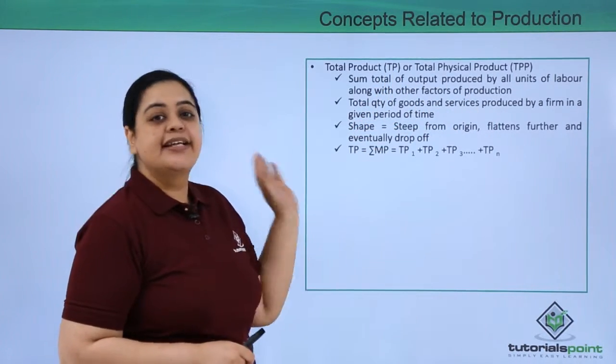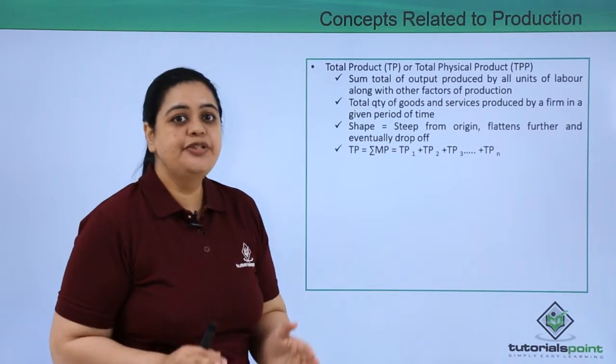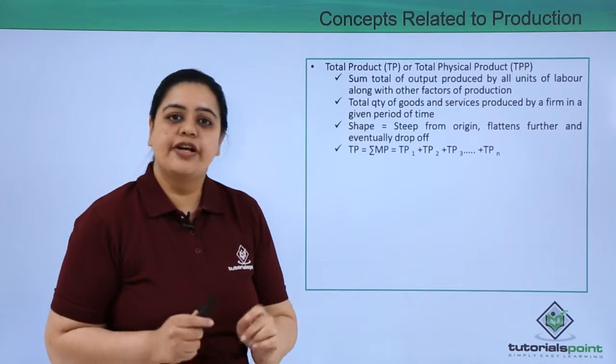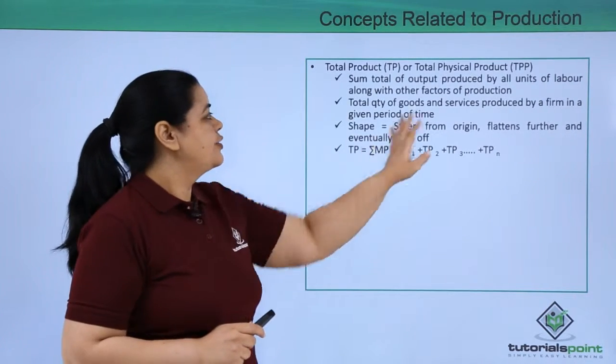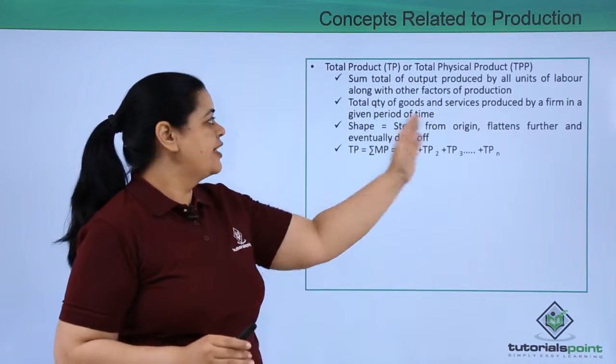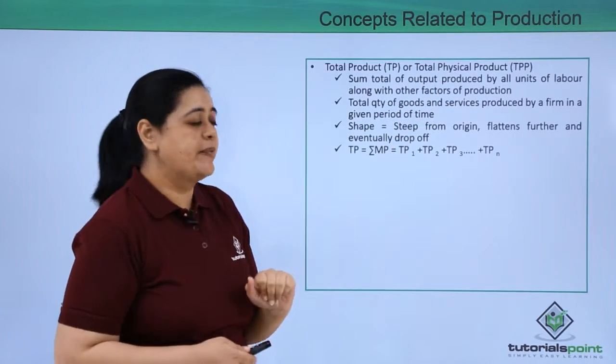What is that? This is the sum total of output which is produced by all units of labor along with factors of production. So the total quantity of goods and services which are produced by a firm in a given period of time is your total product or TPP.